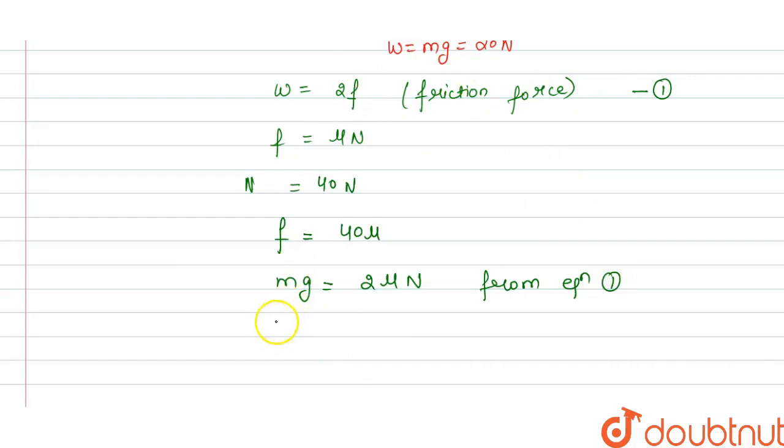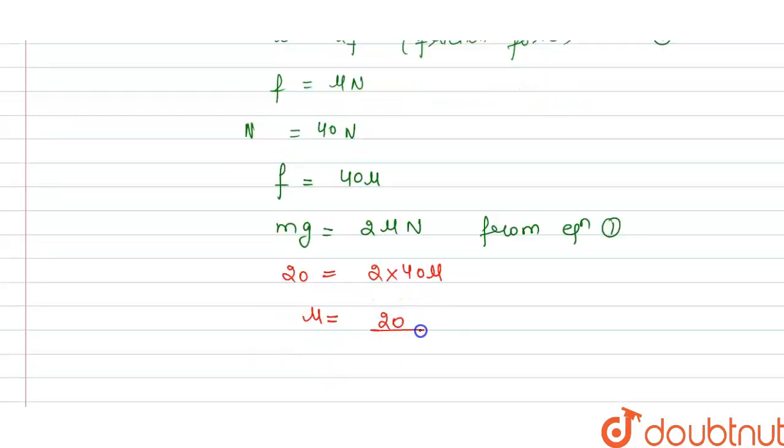We have mass into acceleration due to gravity is given to us as 20, and this is 2 and this is 40 mu. So from this we get coefficient of friction mu is equal to 20 divided by 2 times 40. So this cancels to 10, so we get 10 by 4, or we can write this as 5 by 2.